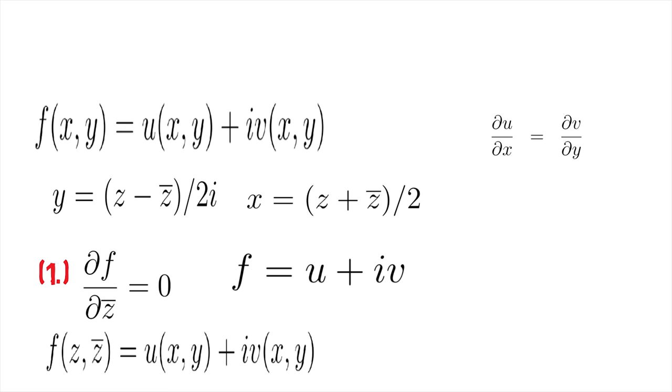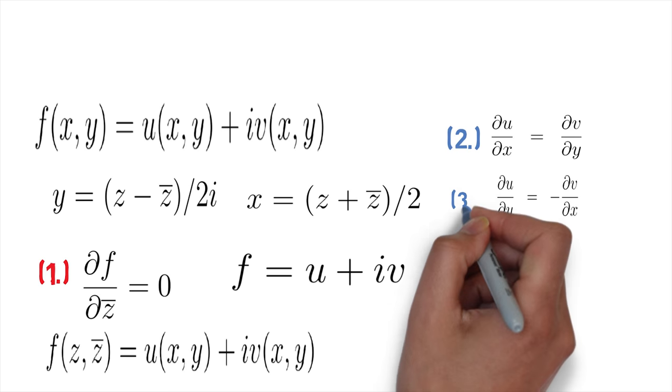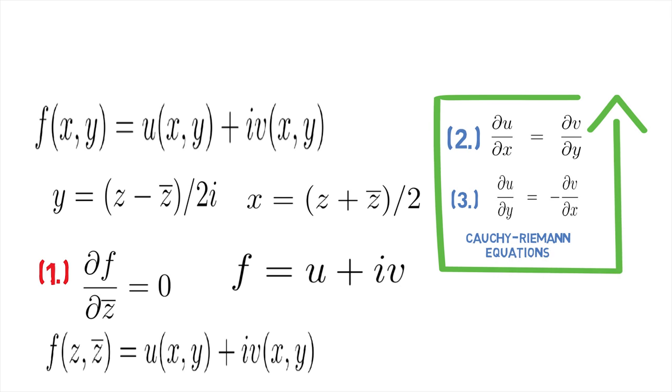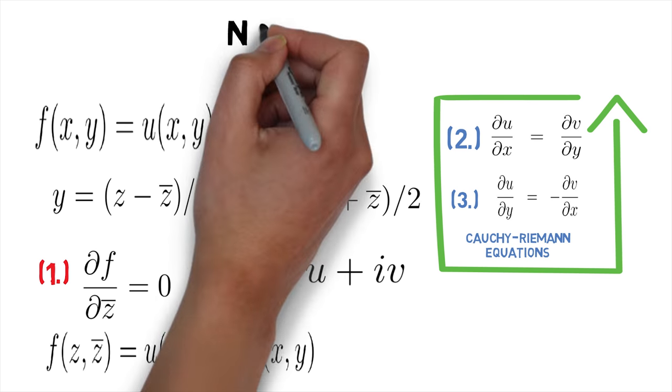In terms of the real and imaginary parts u, v of f, condition 1 is equivalent to ∂u/∂x equals ∂v/∂y (mark this as 2nd) and ∂u/∂y equals minus ∂v/∂x (mark this as 3). Equations 2 and 3 are known as Cauchy-Riemann equations. They are a necessary condition for f equals u plus iv to be analytic.